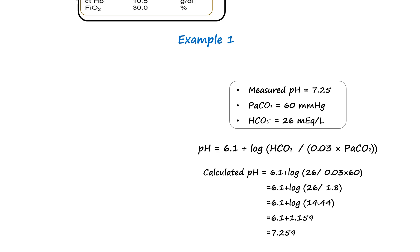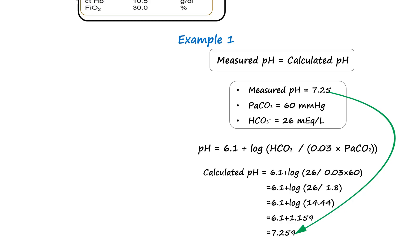Comparing the two, the measured pH is 7.25 and the calculated pH is 7.26, which is extremely close, differing by only 0.01 units. Such a minor difference is considered physiologically acceptable and confirms that the ABG sample is reliable and internally consistent.